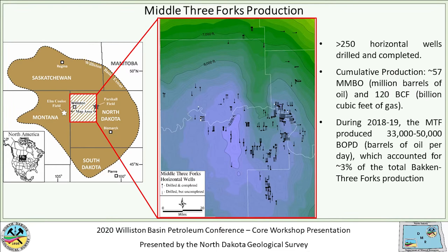The majority of those 250-plus horizontal wells were drilled and completed after 2014, when oil prices were in the range of about $50 to $60 per barrel WTI pricing. This indicates the unit is economic to drill and develop at that oil pricing — you don't need $80 to $100 oil to get economic results out of the middle Three Forks in at least portions of the basin.